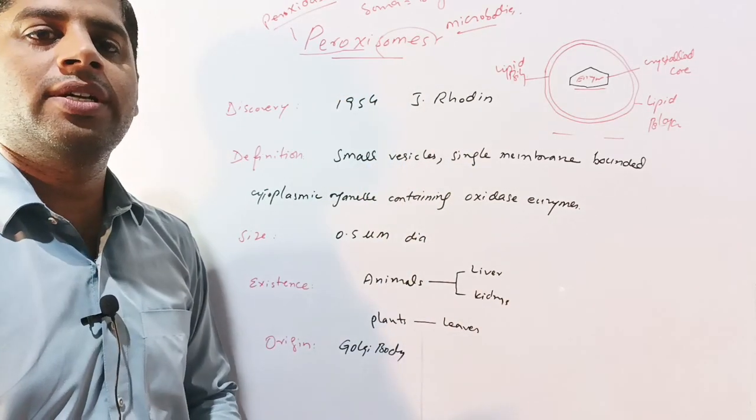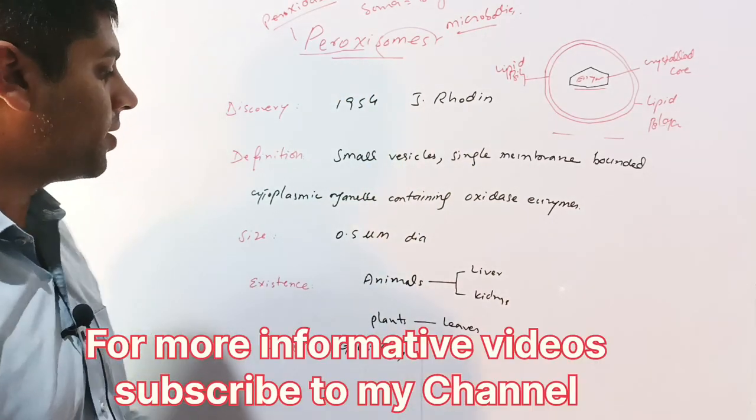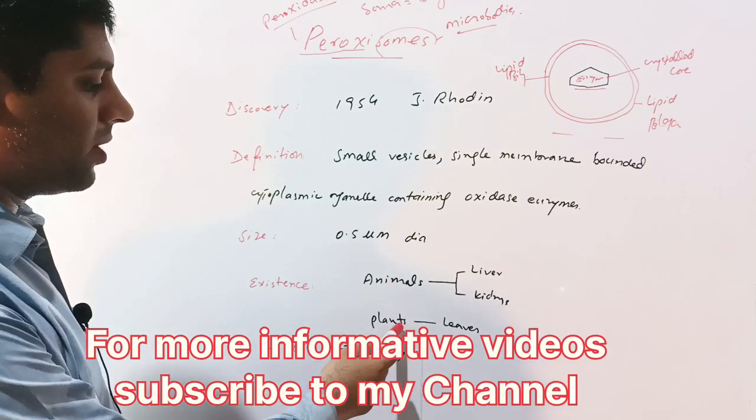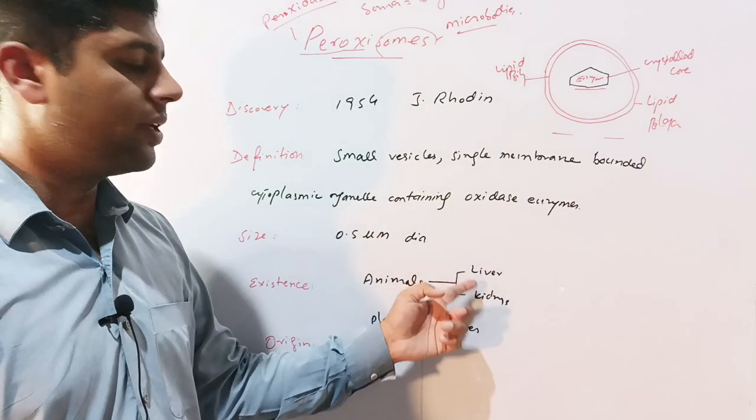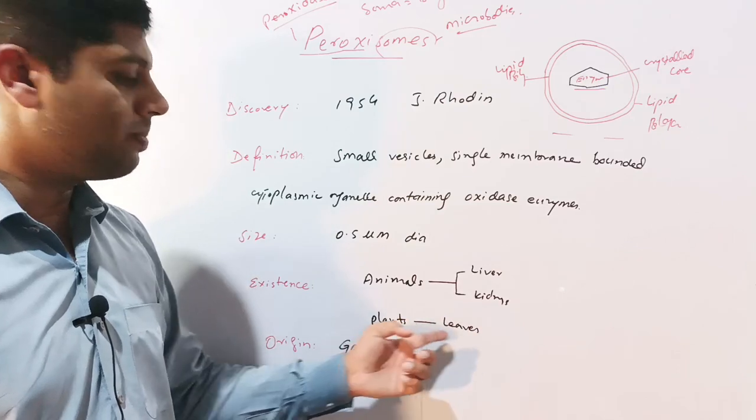Peroxisomes are present in all types of eukaryotic cells and are absent in prokaryotes. In eukaryotes, these are present in both animals and plants. In animals, peroxisomes are present in liver and kidneys, while in plants they are present in the leaves.